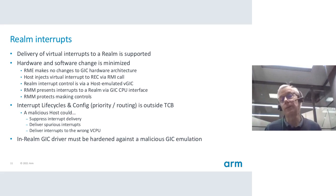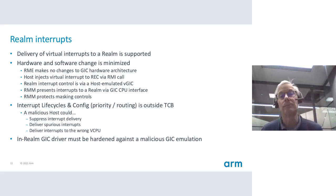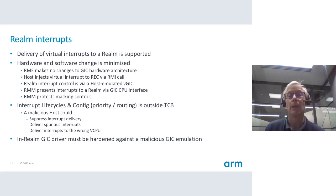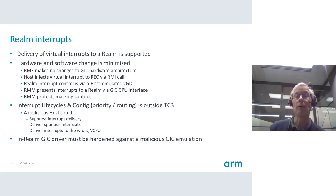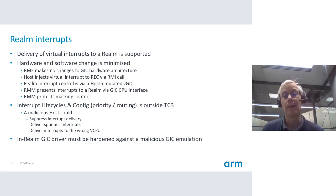Regarding interrupts: physical interrupts like timers are delivered to EL2 as today. To minimize guest changes, there are no changes to the VGIC type stuff that guests would expect. When the host determines that interrupts need to be delivered, that will be another RMI call through to the RMM. The RMM will then inject the interrupt into the virtual GIC. Any GIC programming — things like mask registers — is maintained and managed within the RMM, so that is isolated from the host, protecting the masking controls.